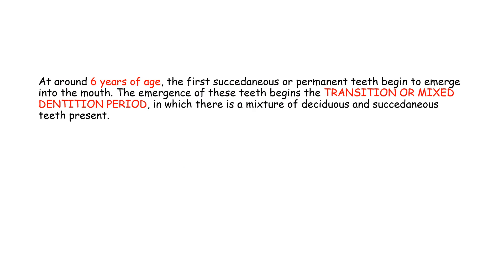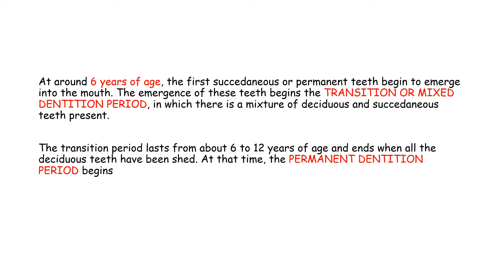At around 6 years of age, the first permanent teeth begin to emerge in the mouth. The emergence of these teeth begins the transition or the mixed dentition period, in which there is a mixture of deciduous and succeeding teeth present. The transition period lasts from about 6 to 12 years of age and ends when all the deciduous teeth have been shed. At that time, the permanent dentition period begins.